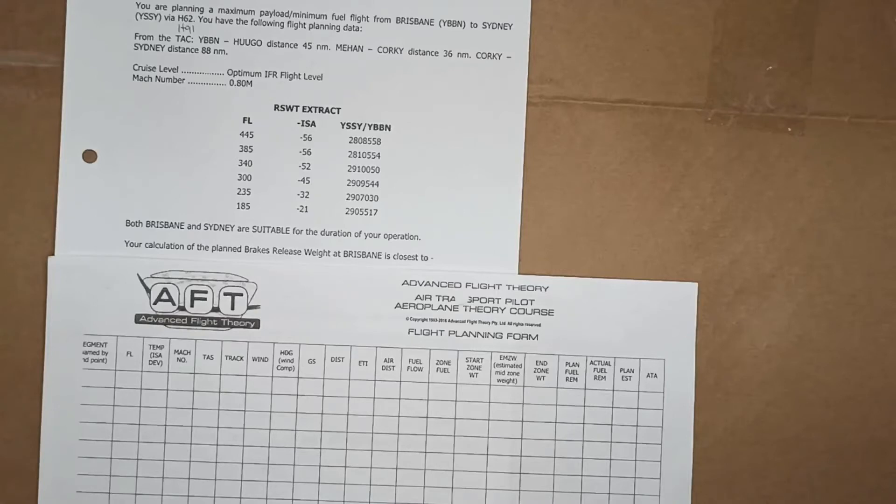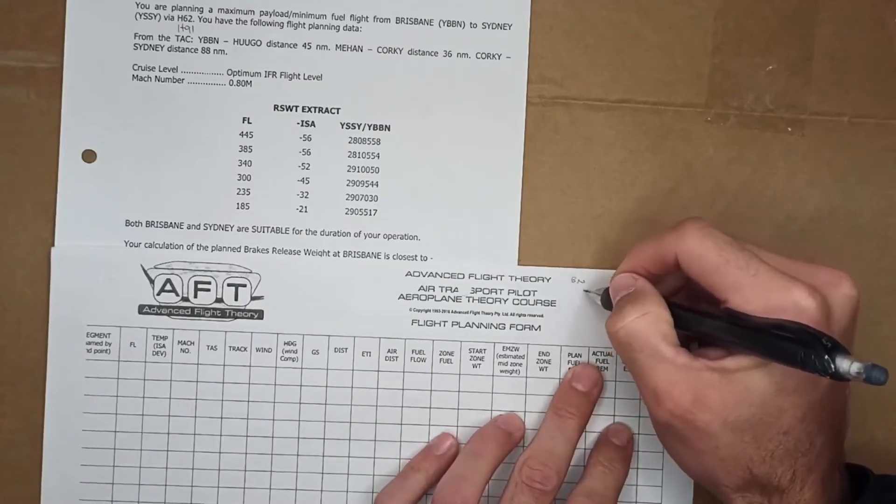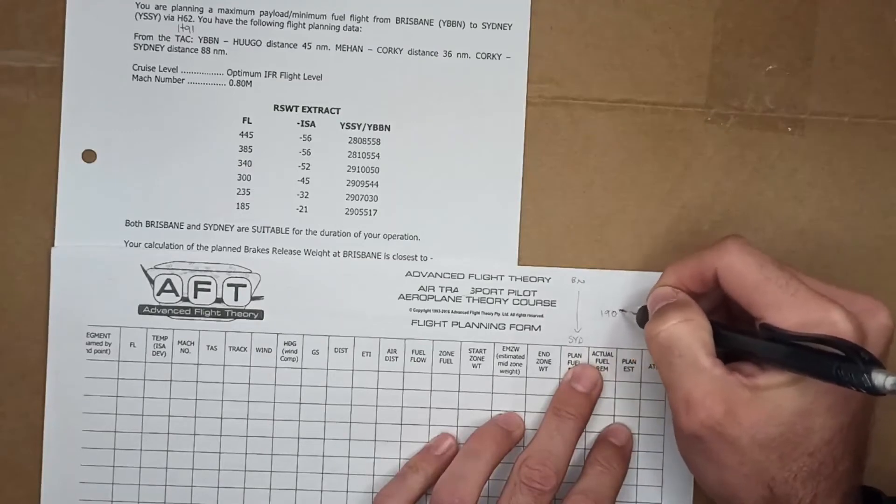What you're going to be doing is working backwards from your landing weight to work out your brake release weight which will be an estimate, and then you're going to redo the calculation for the variable reserve, add it to your zero fuel weight and get a more accurate based brake release weight which you'll have to type in the answer.